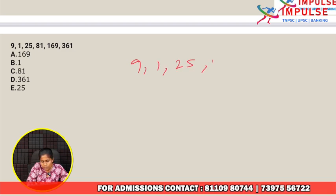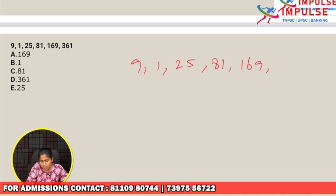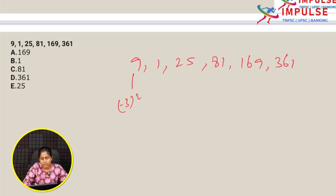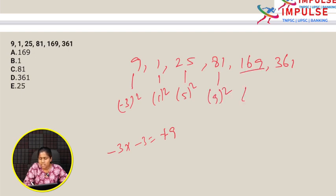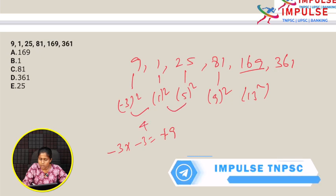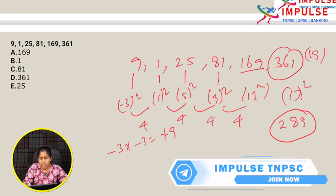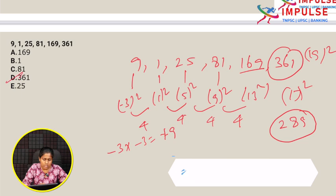Next series: 9, 1, 25, 81, 160, 9, 361. These are square numbers: 3 square, 1 square, 5 square, 9 square... The logic uses plus 4 each time: 3, 7, 11, 13, then 13 plus 4 is 17, and 17 square is 289. In this pattern, 361 is 19 square but should be 289 instead. Wrong number is 361. Option D.